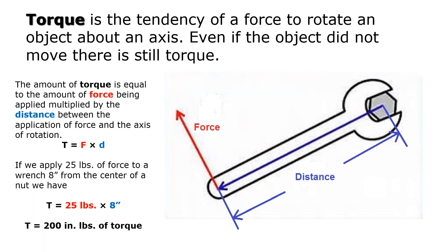Torque is the tendency of a force to rotate an object about an axis. Even if the object did not move, there is still torque. The amount of torque equals the force applied multiplied by the distance between the application of force and the axis of rotation. For example, if we apply 25 pounds of force to a wrench 8 inches from the center of a nut, torque equals 25 pounds times 8 inches, or 200 inch-pounds.